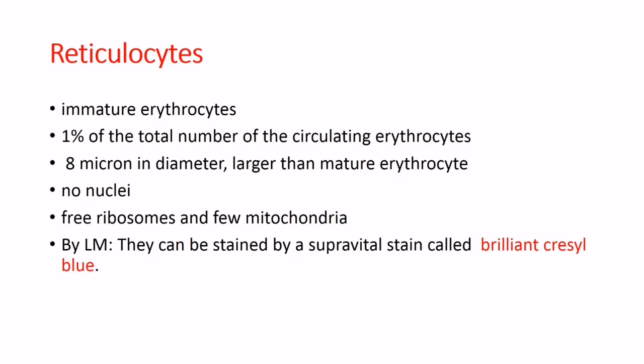Reticulocytes are immature erythrocytes, comprising 1% of the total number of circulating erythrocytes. They are 8 microns in diameter, larger than mature erythrocytes. They have no nucleus but contain free ribosomes and few mitochondria. By light microscope they can be stained with a supravital stain called brilliant cresyl blue.